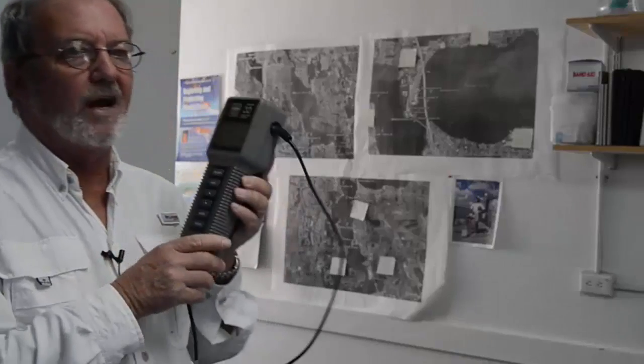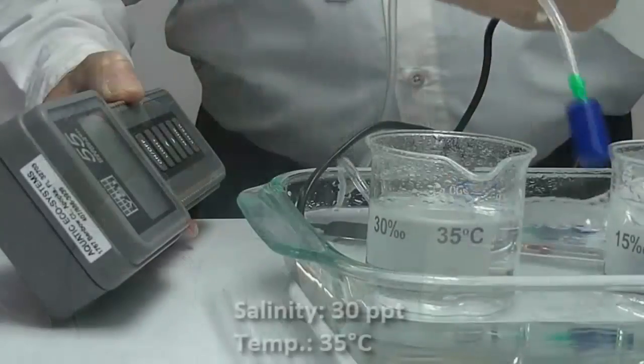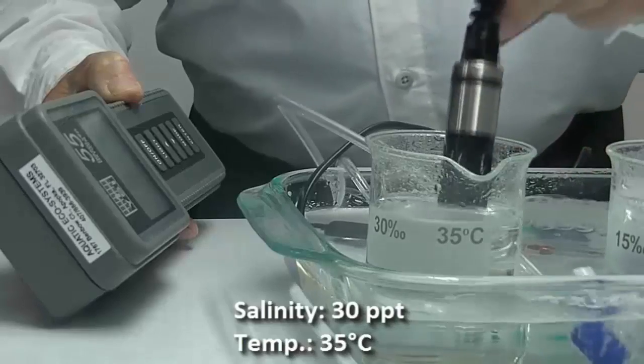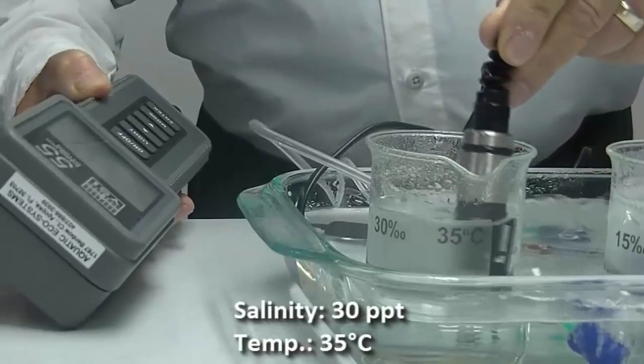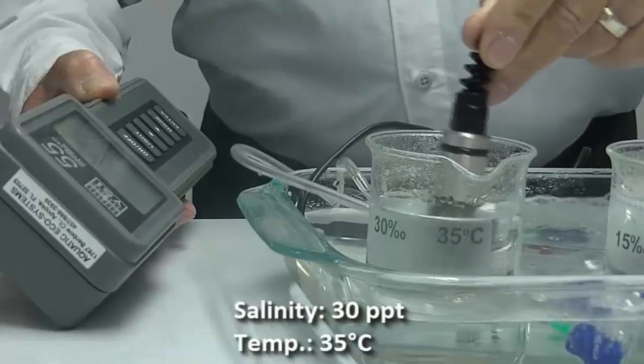So now we're going to take a dissolved oxygen meter and this is called a YSI 55 dissolved oxygen meter and the degree of current that passes across, the amount of electricity, is a measure of the dissolved oxygen in the water.